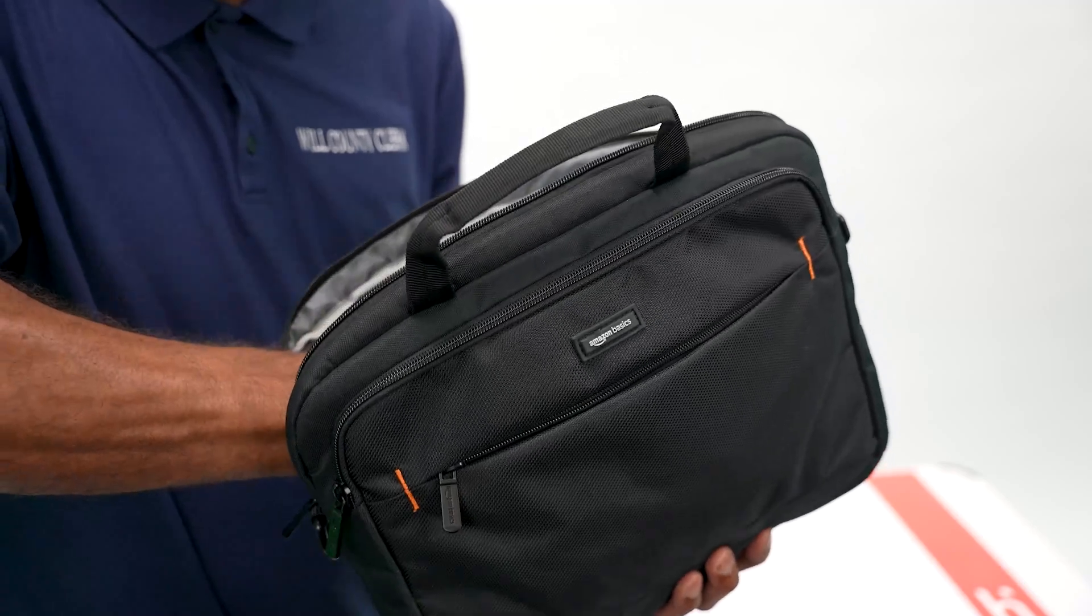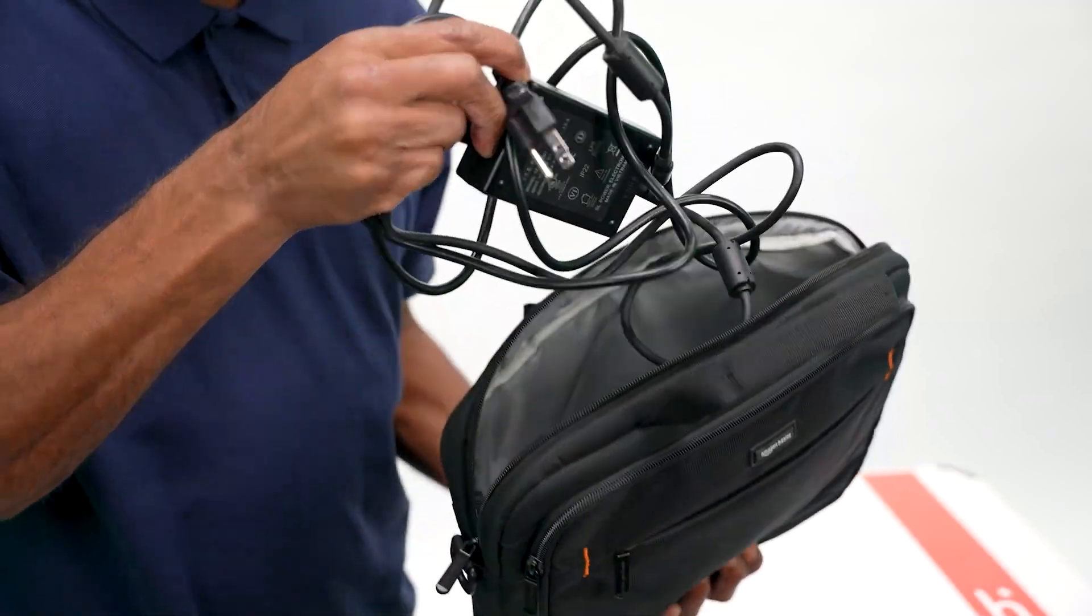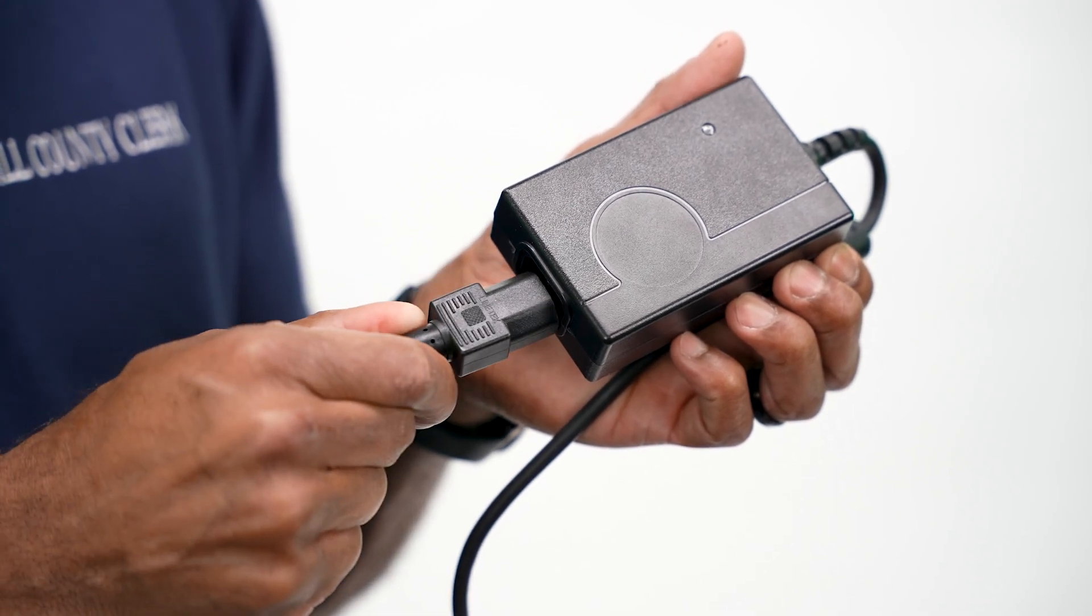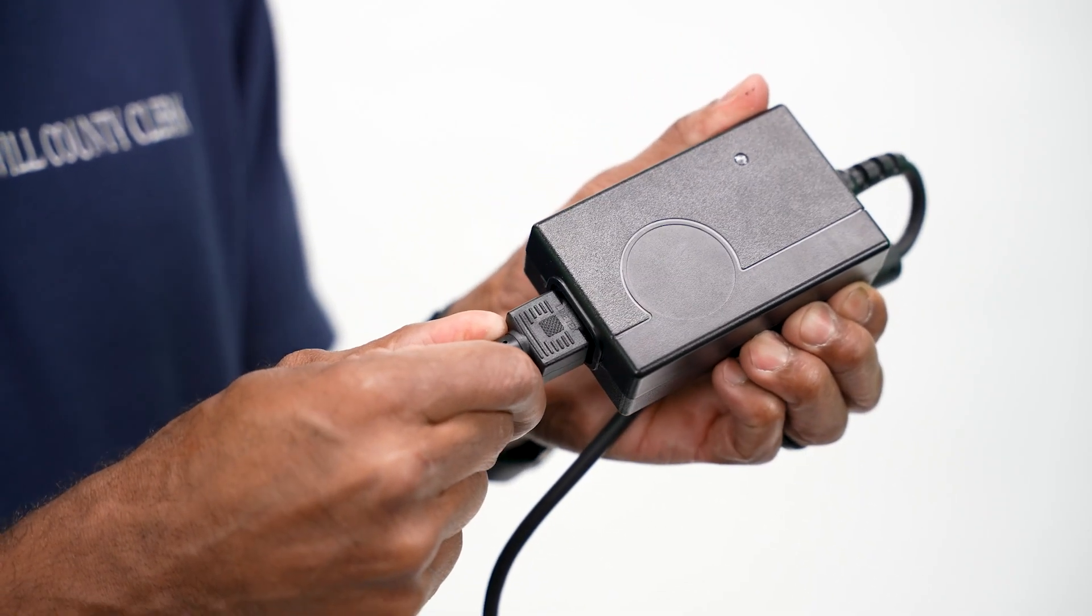Remove the touch writer power cord and the power brick from the black electronics supply bag. The ballot counter and touch writer power cords are identical. These cords may have arrived assembled. If they are not assembled, plug the power cord into the power brick.